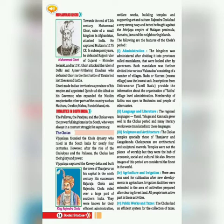In the First Battle of Tarain, Mohammed Gori fought against Prithviraj Chauhan. Prithviraj Chauhan defeated Mohammed Gori in the first battle. But in the Second Battle of Tarain, Mohammed Gori defeated and killed Prithviraj Chauhan. Then Gori made Indian territories provinces of his empire and appointed Qutbuddin Aibak as his governor.